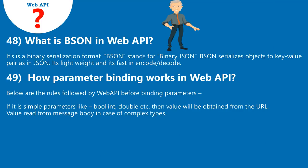Question 48: What is BSON in Web API? BSON is a binary serialization format. BSON stands for Binary JSON. BSON serializes objects to key-value pairs as in JSON. It is lightweight and fast in encode/decode.